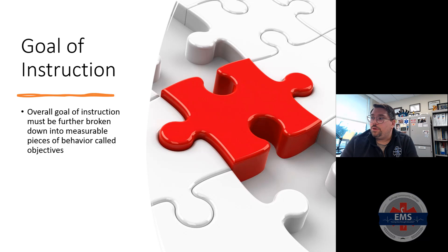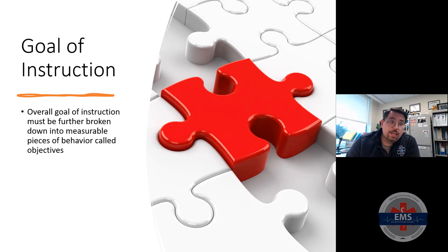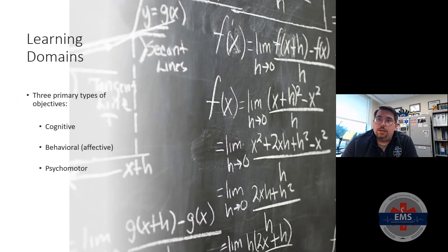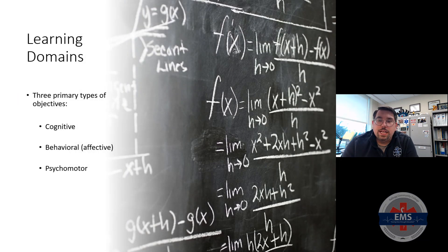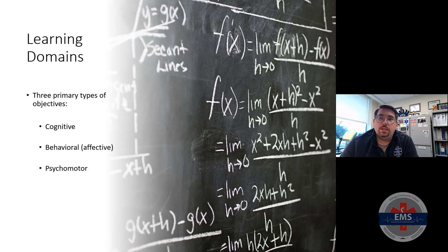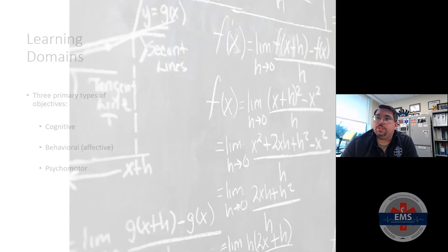The general education goal for EMT training is to graduate competent, compassionate providers of basic emergency medical care — really for anybody in EMS. We want to provide entry-level competency at the level of care we're training for. The overall goal of instruction has to be broken down into further measurable pieces of behaviors, which we call objectives. Objectives clearly state what is to be learned and accomplished — they're measurable statements of behavior required to demonstrate that learning has actually occurred. When we write objectives, we're going to write them for one of the three primary learning domains: cognitive, affective, or psychomotor.